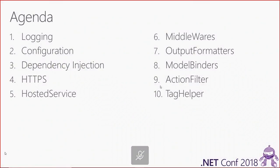That's the agenda for today. We have over 10 different topics, and because we switch topics during the demos, it's okay to ask questions after the demo — that's absolutely fine. The first topic is about logging: how you customize your logging or add a custom logger. We then go through configuration, dependency injection, HTTPS, and hosted services. I really like hosted services to do something in the background. We go through middleware, output formatters, model binding, action filters, and more. As you can see, we're going from the C-sharp backend up to the view.